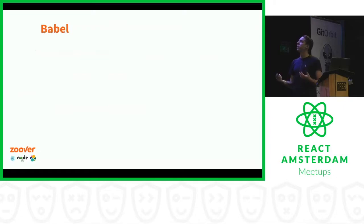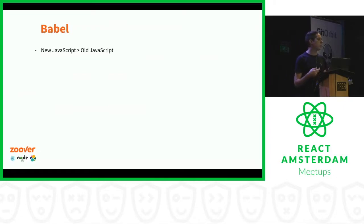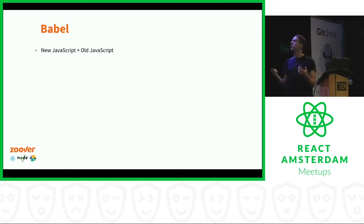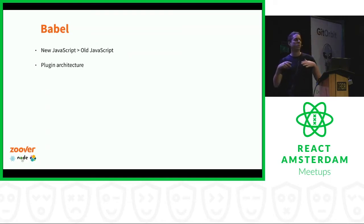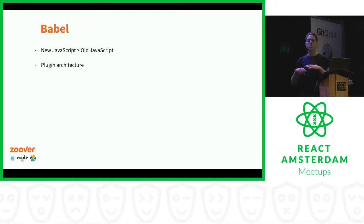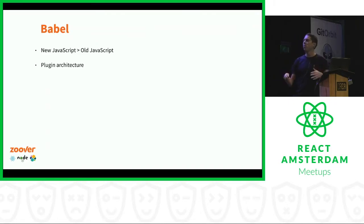Then we have Babel, which is mostly used for compiling newer JavaScript into older JavaScript. It's actually much more than that — it has a plugin architecture that allows you to do basically everything you want with any JavaScript file: edit, make changes, add code, remove code, et cetera. It's super extendable.